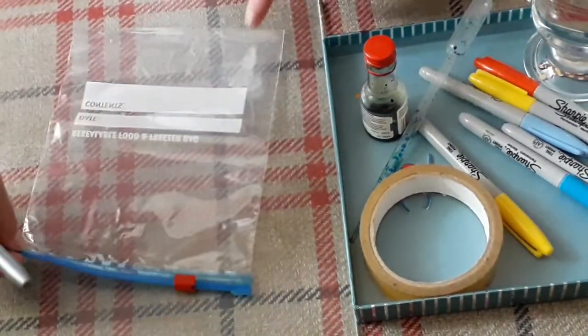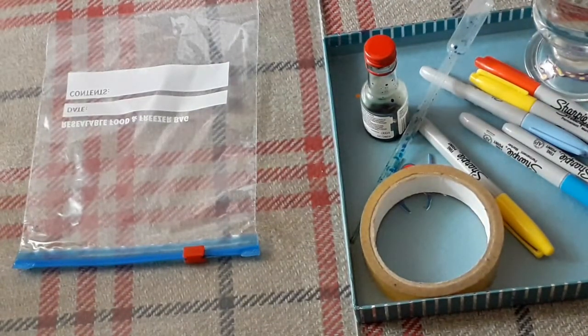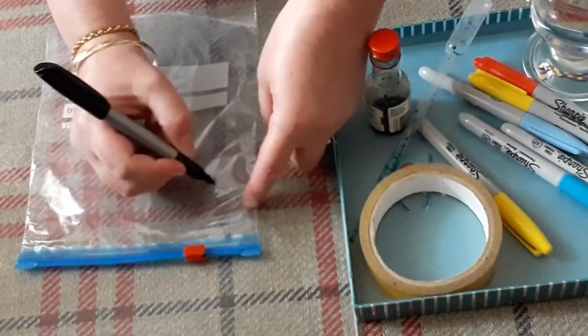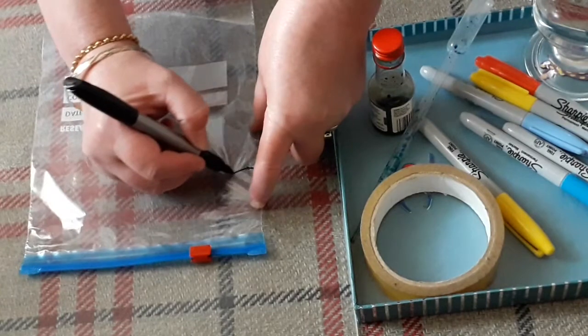So you're going to take your bag and on it, with your permanent marker, you're going to draw the sun, so we're going to draw the sun in the corner.